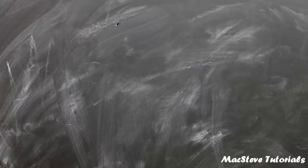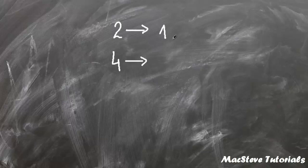Now let's find greatest common factor for 2 and 4. The factors of 2 are 1 and 2, while the factors of 4 are 1, 2 and 4. So the greatest common factor for 2 and 4 is 2.